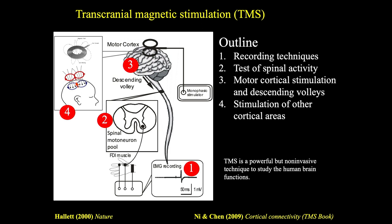TMS is a very good technique to study the human brain function. As we can see from this slide, if we give a stimulation to the human brain, it produces a descending volley in the spinal cord. It can then activate the spinal motor neuron pool, and in transmission, it can activate the target muscle. We can record the response in the target muscle.